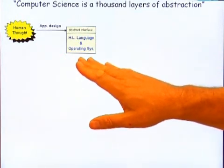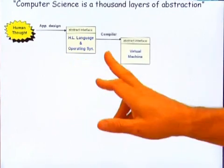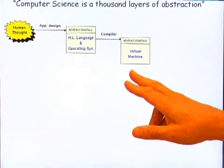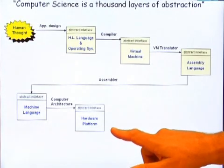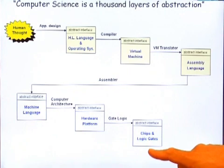To wrap up, I'd like to summarize our approach. One of my colleagues once said that computer science is a thousand layers of abstraction, which is a very perceptive observation. When you write an application, you use a high-level language, which is translated into VM code — yet another abstraction — which is then translated into machine language, which is realized on a hardware platform, which in turn is built from a chipset implemented using logic gates. The buck stops at the NAND or NOR level, because below that it's no longer computer science — it becomes electrical engineering and quantum mechanics. In the course, we do this in the other direction: we start at the bottom.